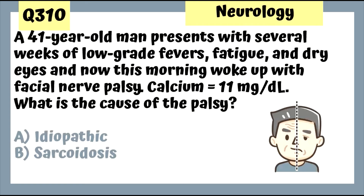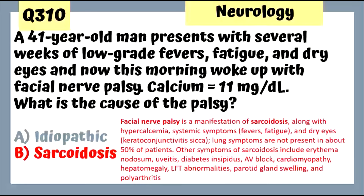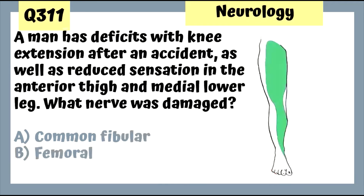Question 310: A 41-year-old man with low-grade fever, fatigue, dry eyes, and now facial nerve palsy; calcium is elevated — this is likely sarcoidosis. Facial nerve palsy is a manifestation of sarcoidosis, along with uveitis, diabetes insipidus, AV block, cardiomyopathy, and hepatomegaly.